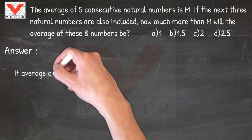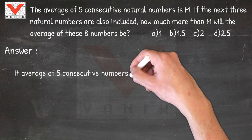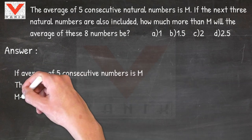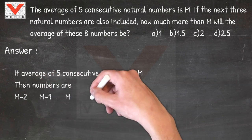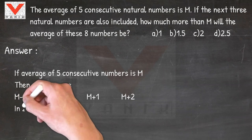Answer. If average of five consecutive numbers is m, then numbers are m minus 2, m minus 1, m, m plus 1, m plus 2.